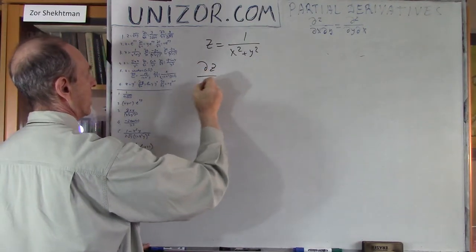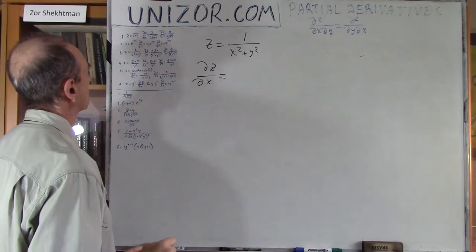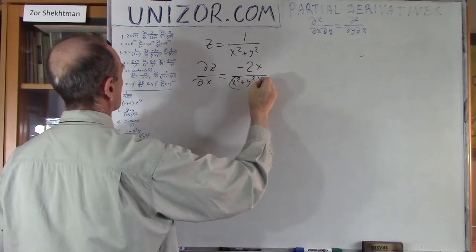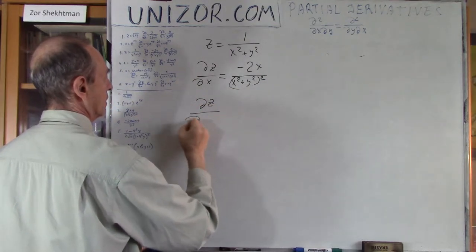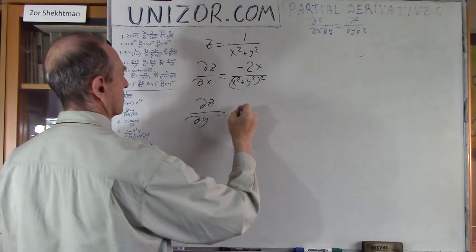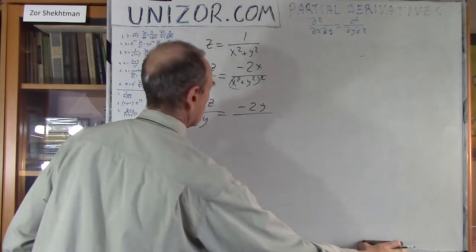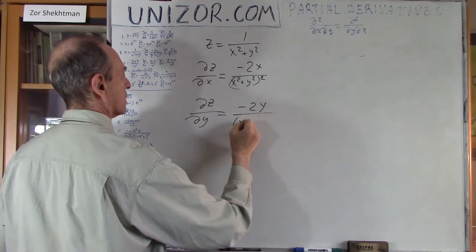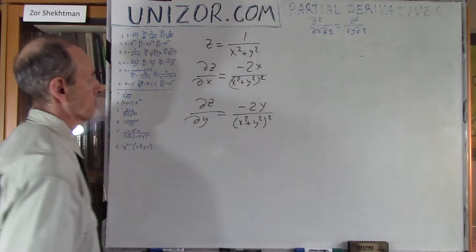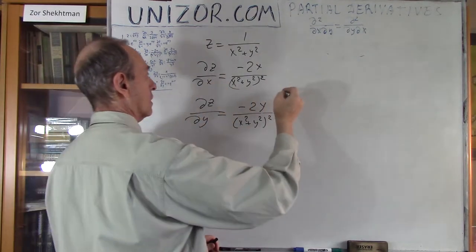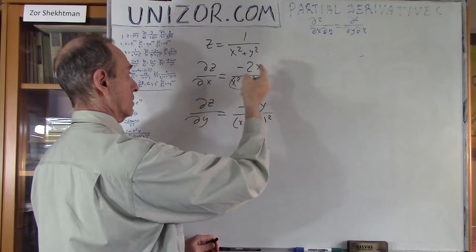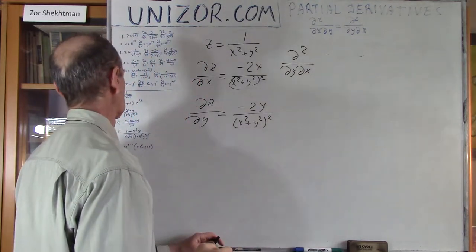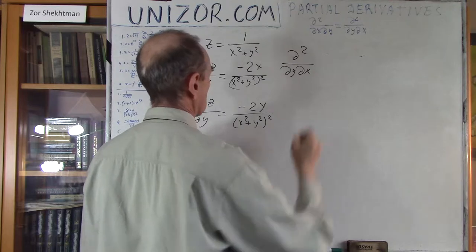Now the third example. My first derivative by x is equal to minus 2x divided by (x² + y²)². My derivative by y equals minus 2y divided by (x² + y²)². I will differentiate the first by y.